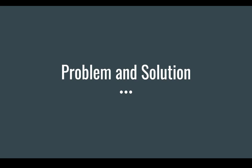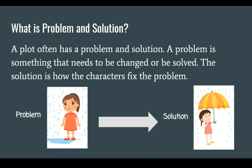Hey third grade! Today we're going to be talking about problem and solution. So what is problem and solution? A plot often has a problem and solution. A problem is something that needs to be changed or be solved. The solution is how the characters fix the problem.